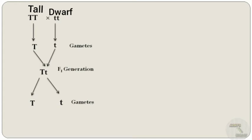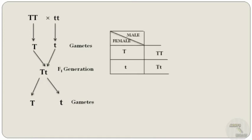Let's discuss Mendel's experiment on the monohybrid cross. Mendel took one tall pea plant and one dwarf pea plant. The tall pea plant is represented by the allele TT and the dwarf pea plant is represented by tt. From TT we get gamete T, and from tt we get gamete t. These two gametes produce Tt in the F1 generation — the heterozygous tall pea plant.